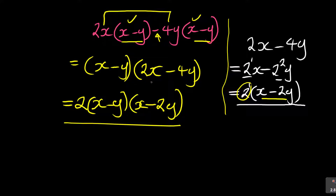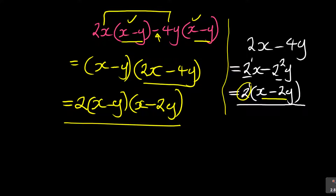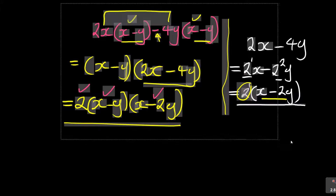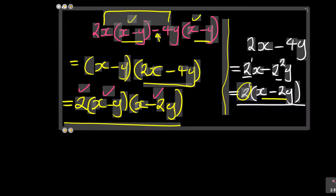If you leave it without fully factorizing, it's incomplete — they are going to penalize you for that. The final answer becomes 2 times bracket X minus Y, times bracket X minus 2Y. I hope you got that. Give yourself the same question and attempt it.